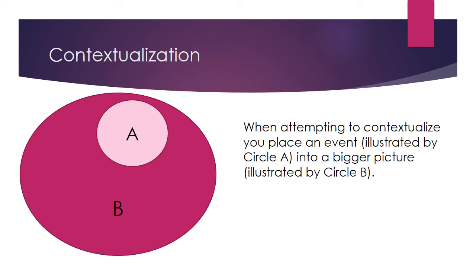Here's a graphic that tries to explain contextualization a little bit better. When you attempt to contextualize, you place an event — illustrated by circle A — into a bigger circle, illustrated by circle B. For example, in our fall of Rome issue, if we were looking at religion, circle A would be the development of Christianity. Circle B would be the impact of new cultural ideas throughout the Roman Empire. So Christianity is just one of the small cultural changes that happened, leading into the welcoming of new cultural ideas in the Roman Empire.